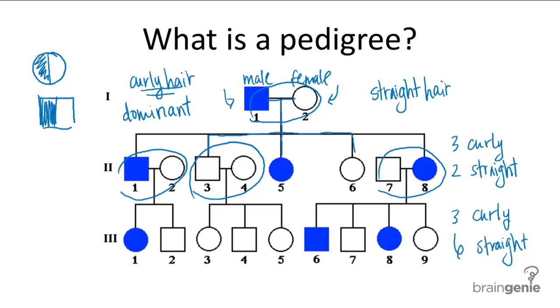And so again, these individuals have the allele but don't express it. So for example, colorblindness is a recessive trait. And in a pedigree chart for colorblindness, individuals that have the allele for colorblindness but are not colorblind are represented as so.